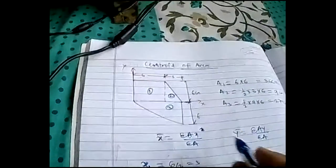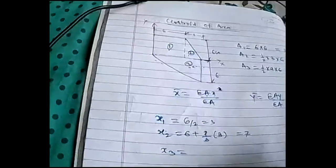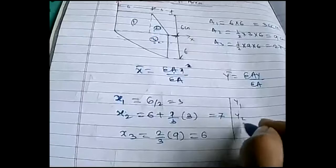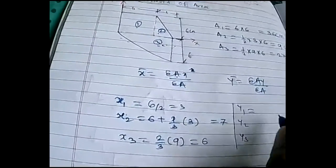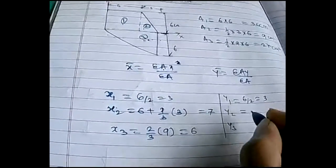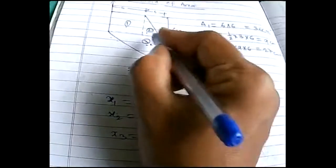For x3, this is a downward triangle whose base is 9. The centroid distance is two-thirds of the base, so x3 = two-thirds × 9 = 6. For y1, it is 6/2 = 3. For y2, it is one-third of the height from the base, so y2 = 6/3 = 2.